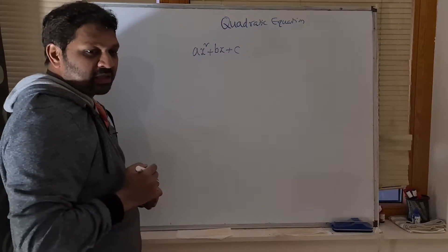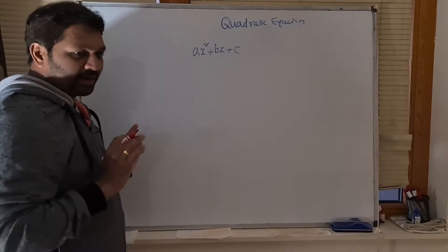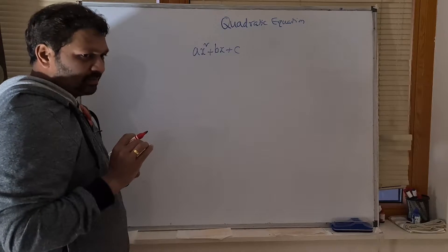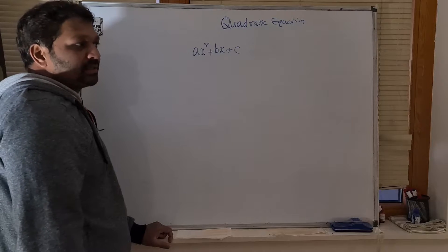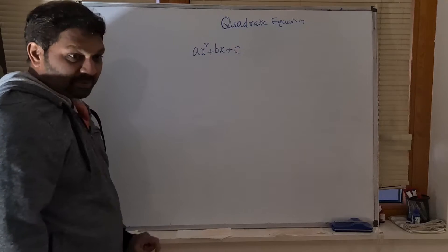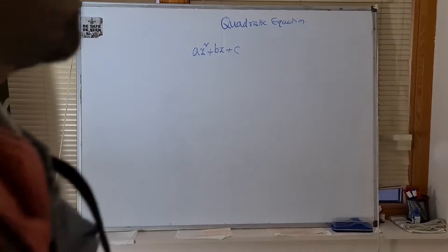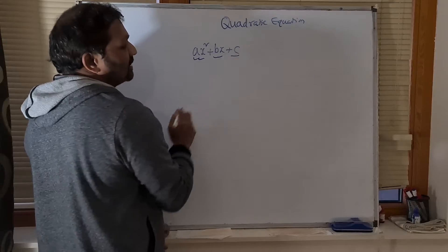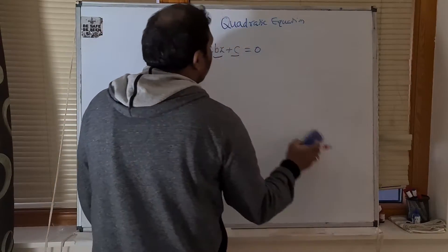Is this a quadratic equation? No — straight away, if you don't see any equal symbol, that is not an equation at all. Any equation should have an equal symbol. What is this called then? It is a quadratic expression. An expression is something that has one term or more than one term. In this case, we have three terms. If I put 'equals 0', then it becomes a quadratic equation.